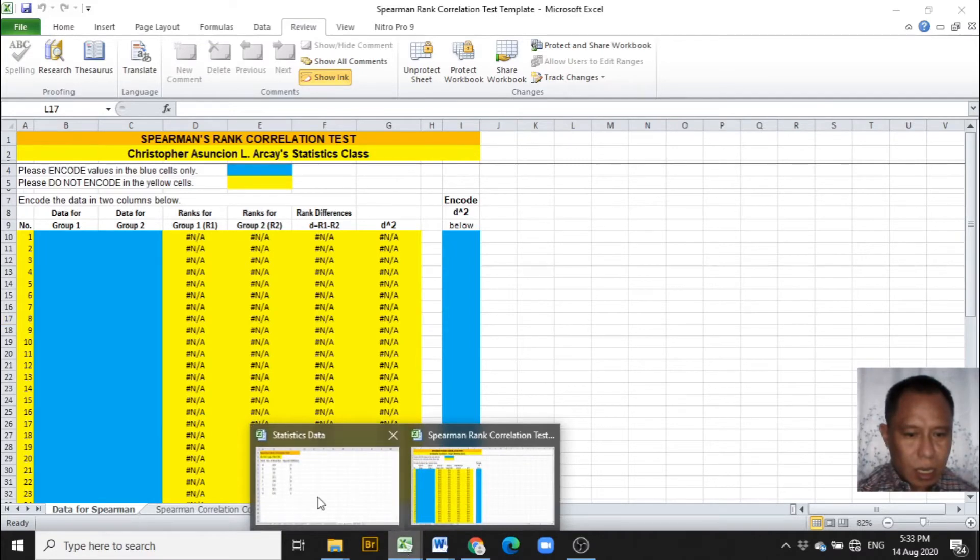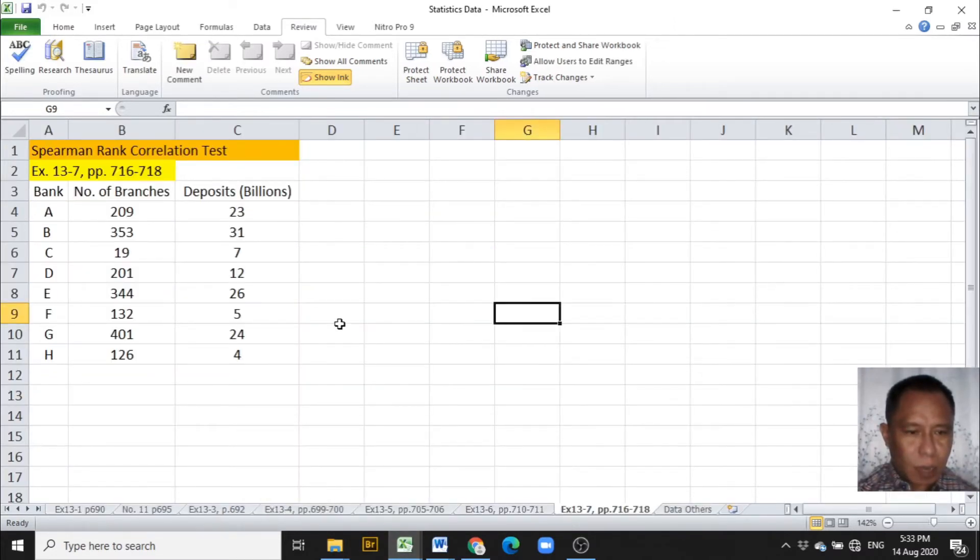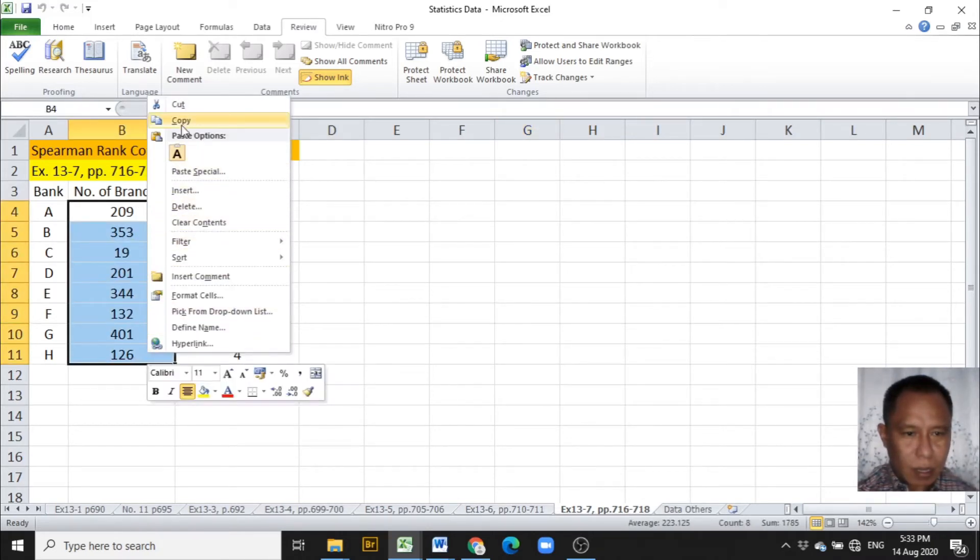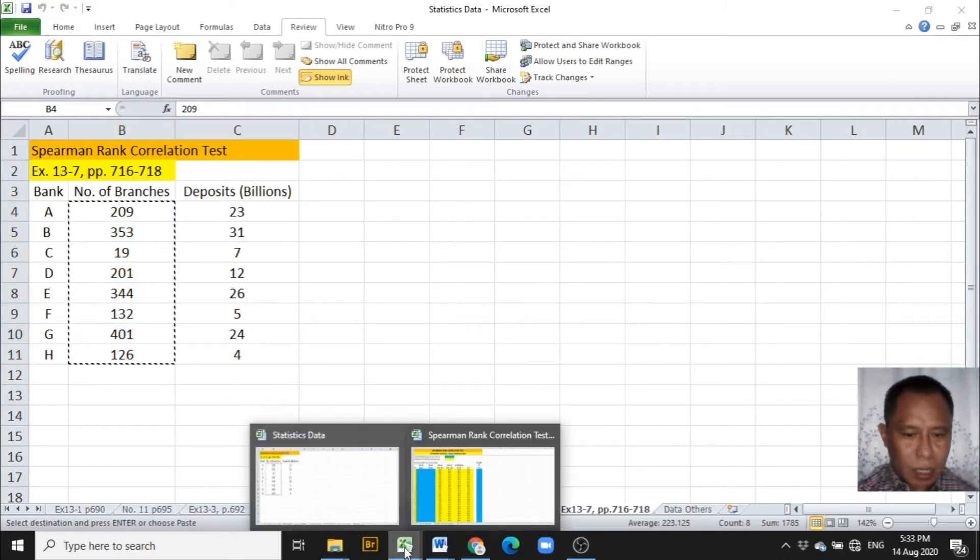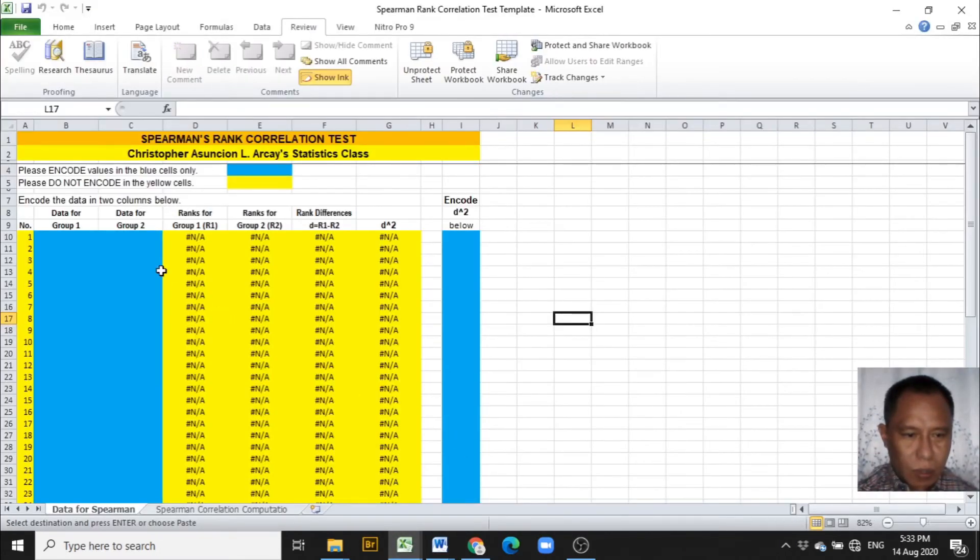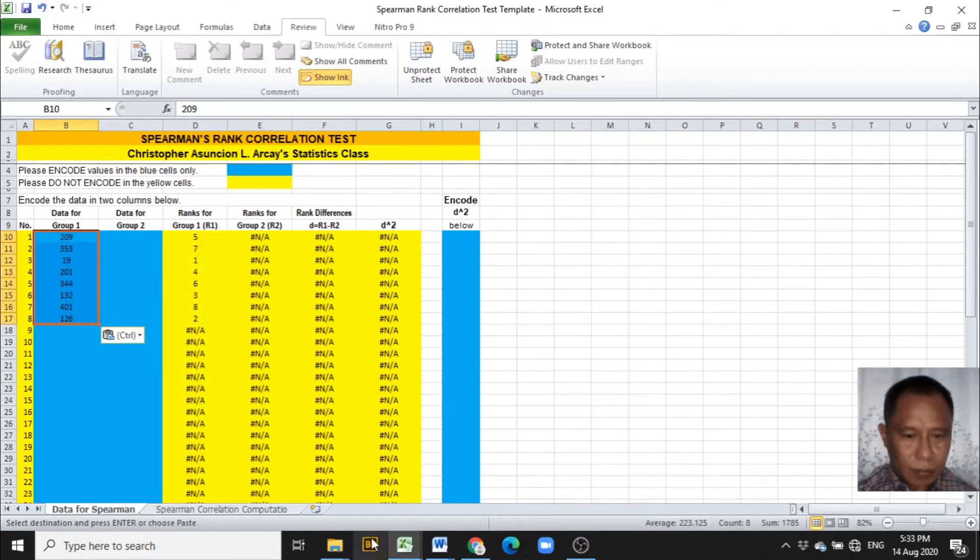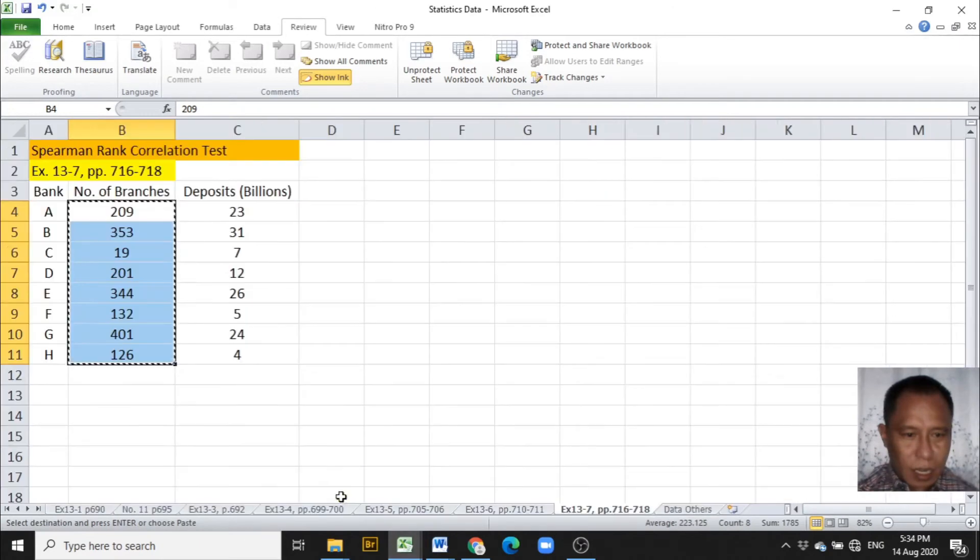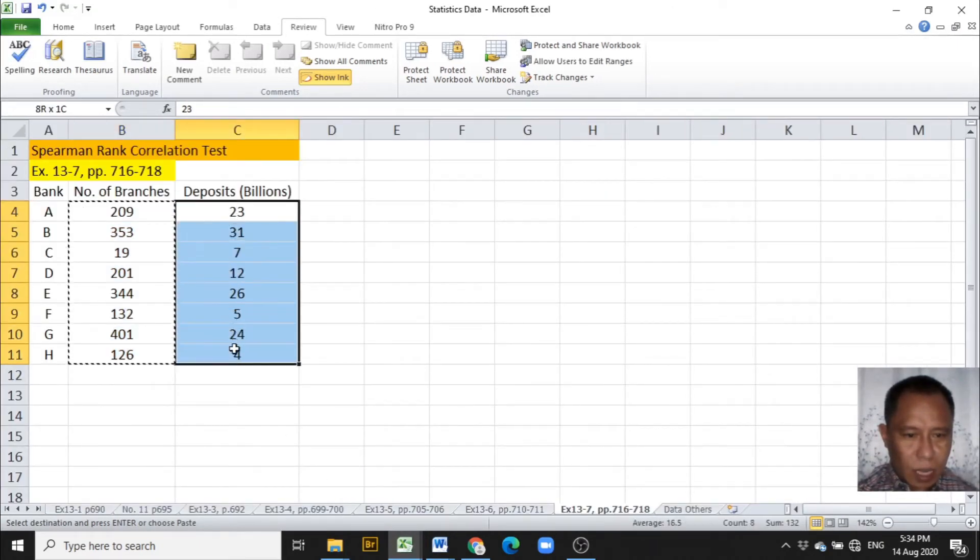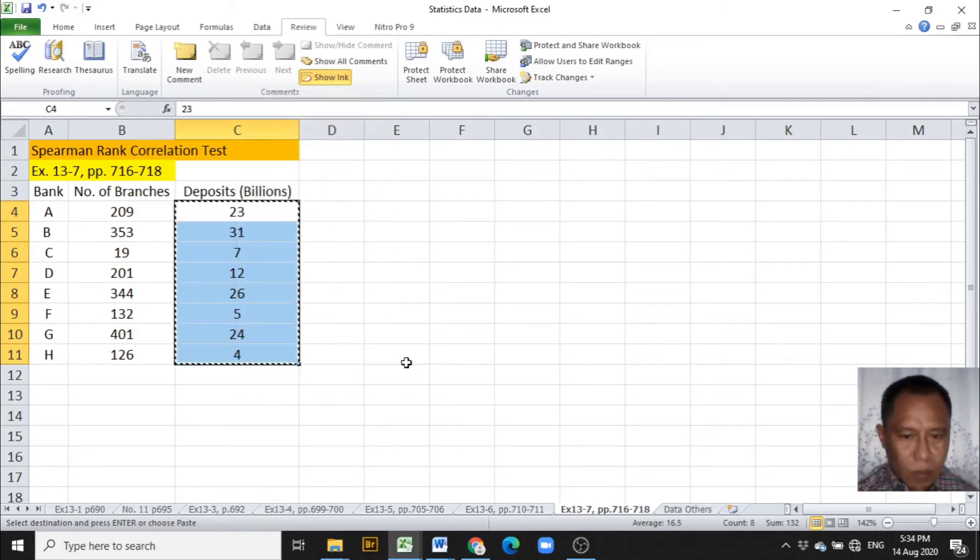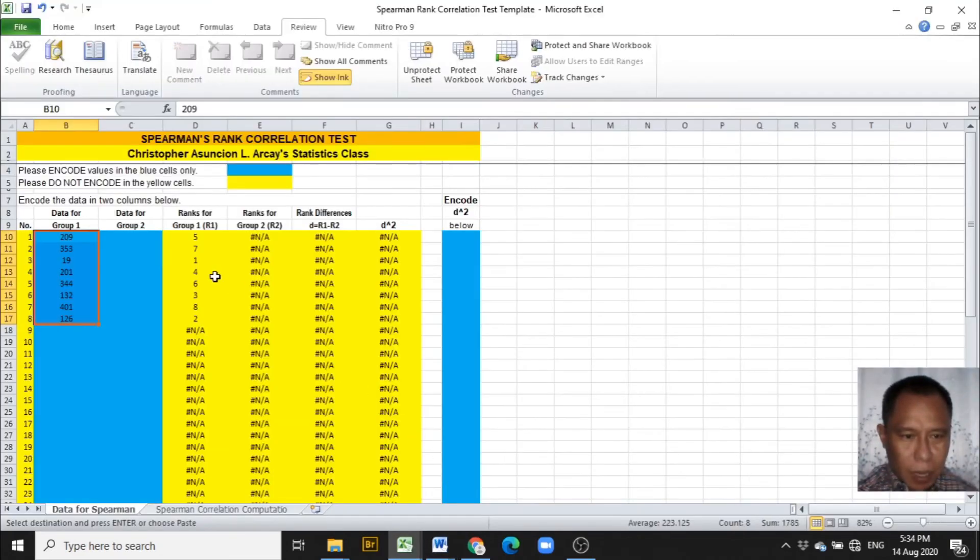Since I encoded the data previously, I just have to copy the data and paste it into the Excel template. The next group of data is for the deposits in billions of dollars and paste it in the next column.